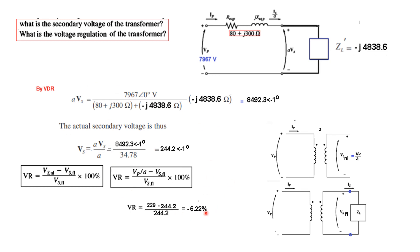Now, you may wonder why we are getting negative regulation. Normally, when you connect a resistive-inductive load, current flows and there are voltage drops in the line, which is why the secondary voltage drops and regulation is positive, around 4–5%. However, in this case a capacitor has been connected, and as you know, a capacitor stores charge. Because of this, the secondary voltage (244.2 V) is actually more than the no-load voltage (229 V), which is why the regulation is negative: −6.22%. I hope this gives you an idea of how to solve this problem easily by following these steps. Thank you.